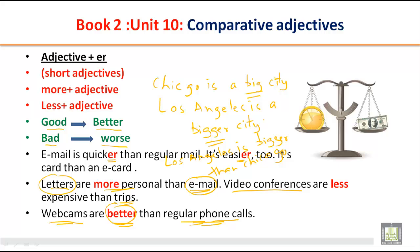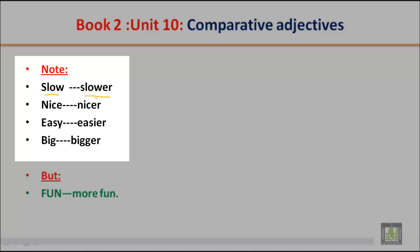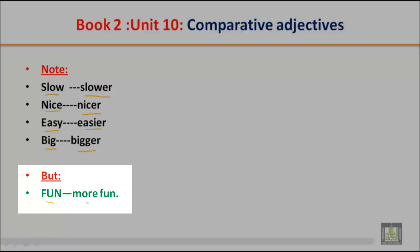How do we compare? We can use good and better, bad and worse, more or less, or we can add -ER to the adjective. For example: slow, slower; nice, nicer; easy, easier; big, bigger. But we can't say 'funner' — we say 'more fun'.